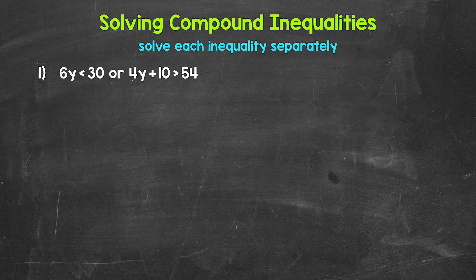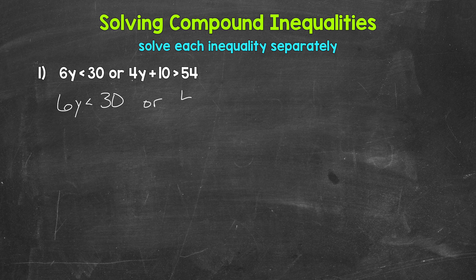Let's jump into number one, where we have 6y is less than 30, or 4y plus 10 is greater than 54. When we solve a compound inequality involving OR, all we need to do is solve each inequality separately. So we need to solve 6y is less than 30, then we need to solve 4y plus 10 is greater than 54.